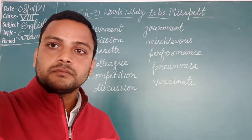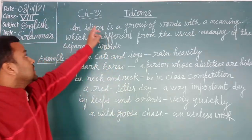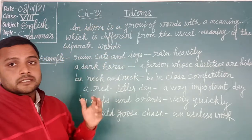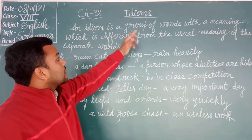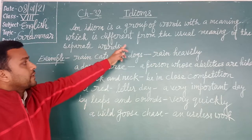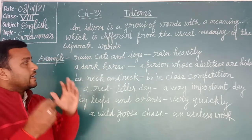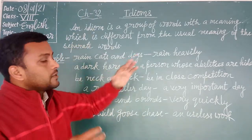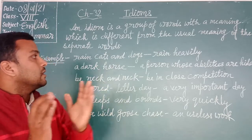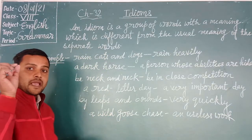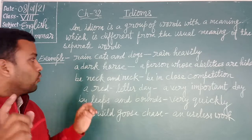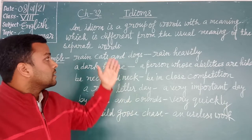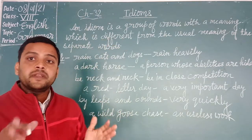Now see chapter number 31: idioms. What is an idiom? An idiom is a group of words with a meaning which is different from the usual meaning of the separate words. An idiom has more than one word, and it has a different meaning from the usual meaning of the separate words.